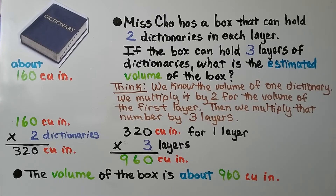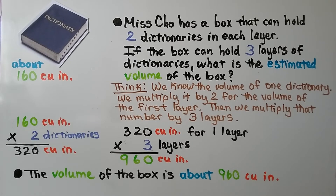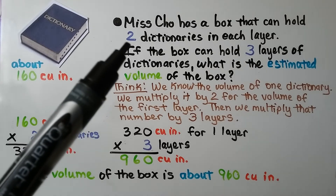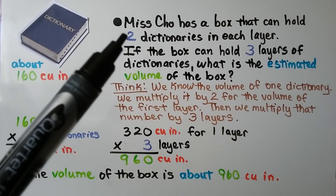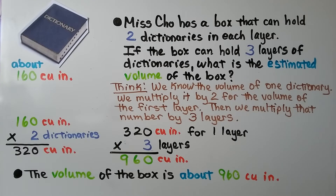Miss Cho has a box that can hold two dictionaries in each layer. If the box can hold three layers of dictionaries, what's the estimated volume of the box? A dictionary is about 160 cubic inches. We can multiply it by two for the volume of the first layer, then multiply that number by three layers.